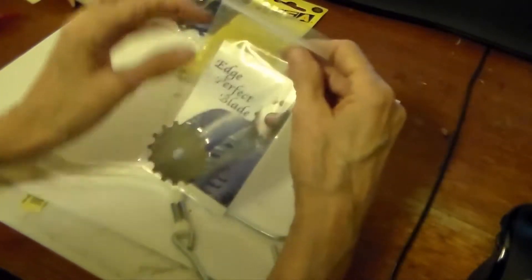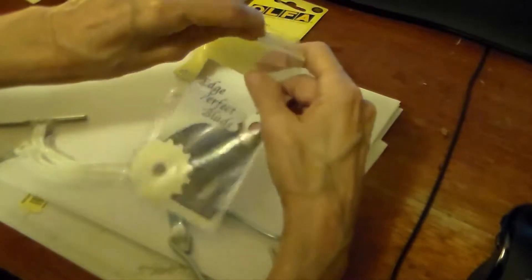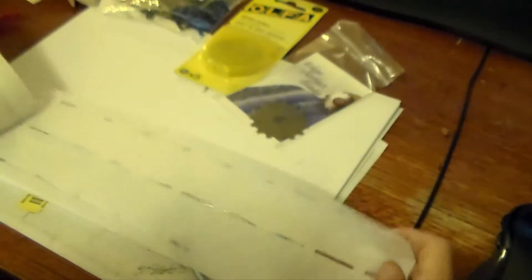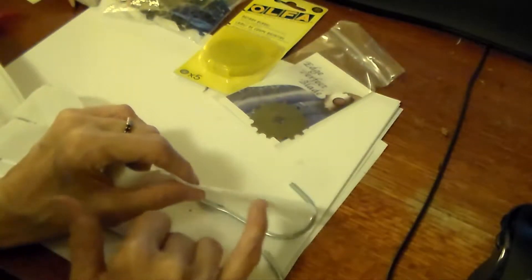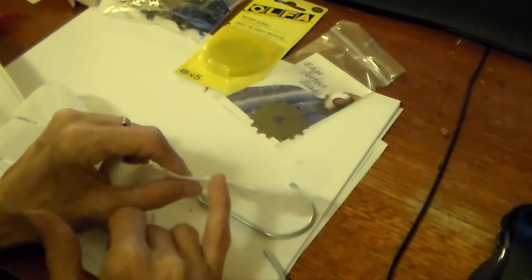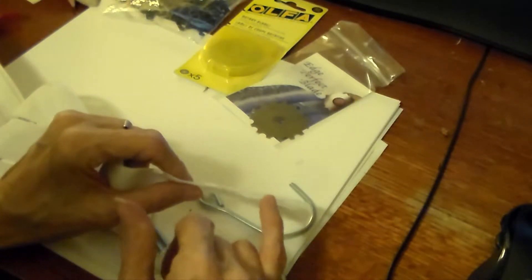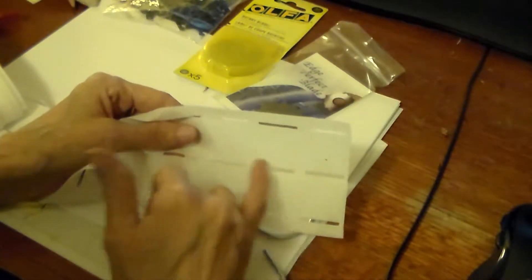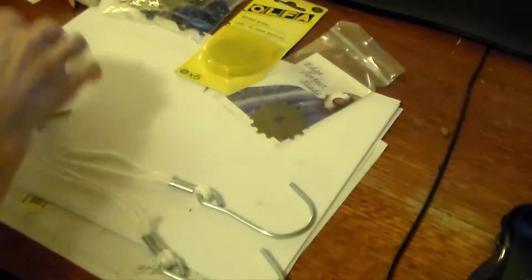The next thing I got was a specialty blade which is the perfect edge blade or the edge perfect blade. What I had got it for was to try and do something like this waistband interfacing where it has these perforations here, so it folds and you don't have all of this interfacing bunching into the fold of your waistband.